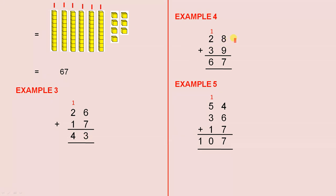Example 4, 28 plus 39. 8 plus 9 gives you 17, which is 7 units or 7 singles plus 1 ten. This column is 3 plus 2 is 5 plus 1 is 6, so that's 67.